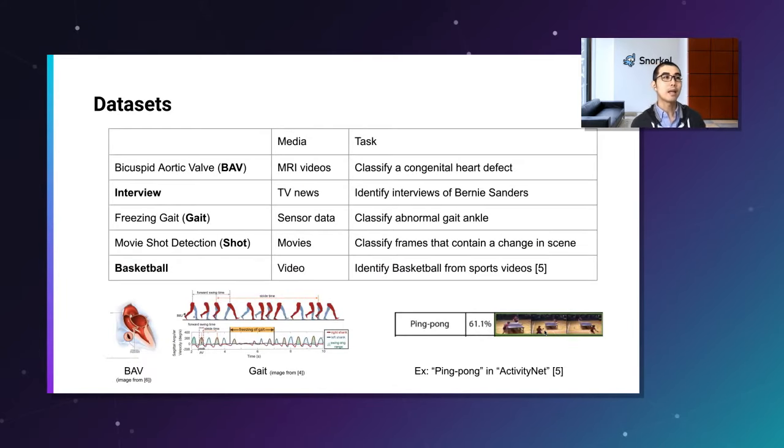And we train a label model Dugong, and we get probabilistic labels. In this case, we have probabilistic labels for a per-frame resolution. And then, if you want, you can train an end model, a discriminative model. So, these are the data sets that the paper used for experiments. They're all sequential data from MRI images, videos, or TV news, or sensor data, and movies and videos. And they're all binary tasks. One example is to classify congenital heart defect, or identify interviews of Bernie Sanders, and so on.